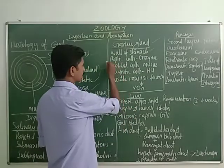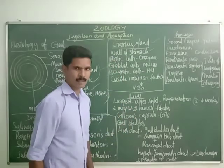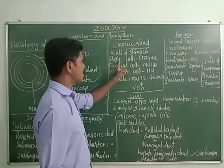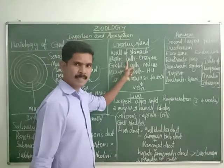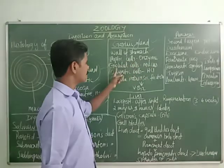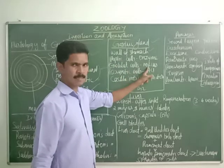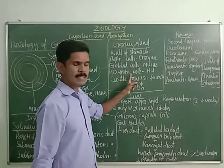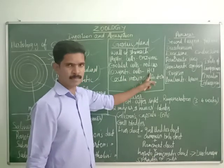The gastric gland consists of three types of cells. The first cell is called peptic cells, which secrete enzymes. The second cell is called goblet cells, which secrete mucus. The last cell is called oxyntic cells, which secrete hydrochloric acid.